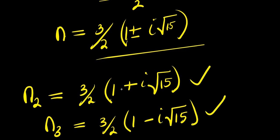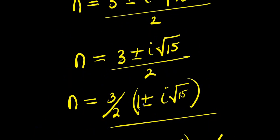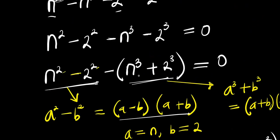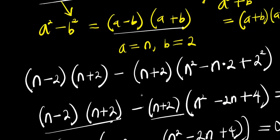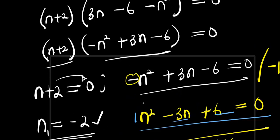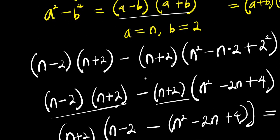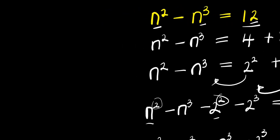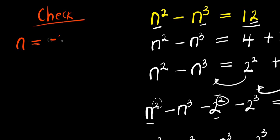So all these are complex values for n. Now we can check by inserting the real value n = -2. My n is -2, that is the real solution, and this is n² - n³.